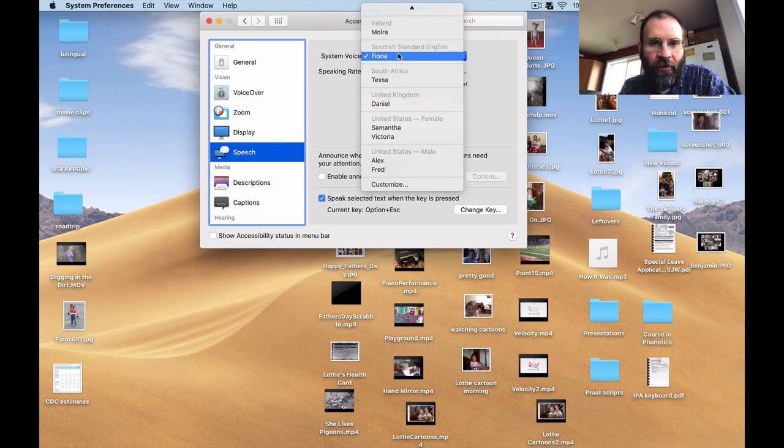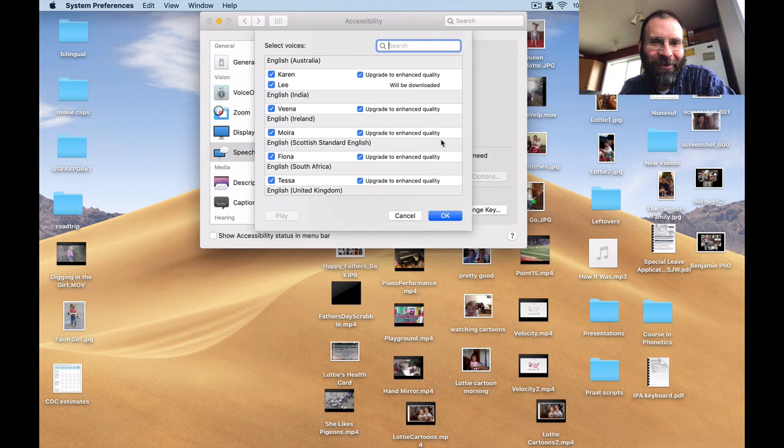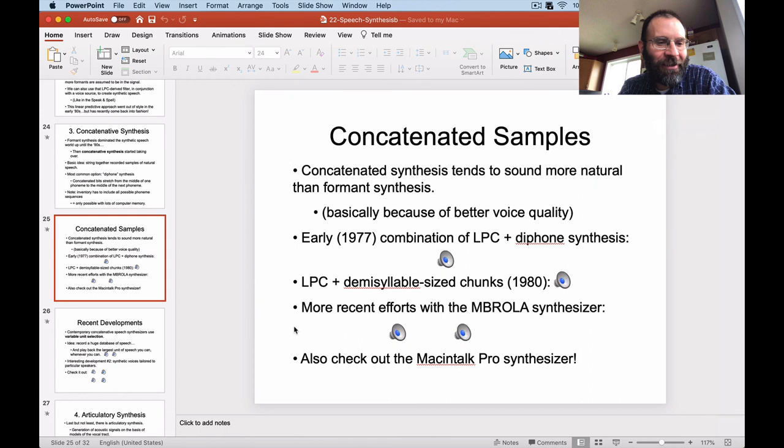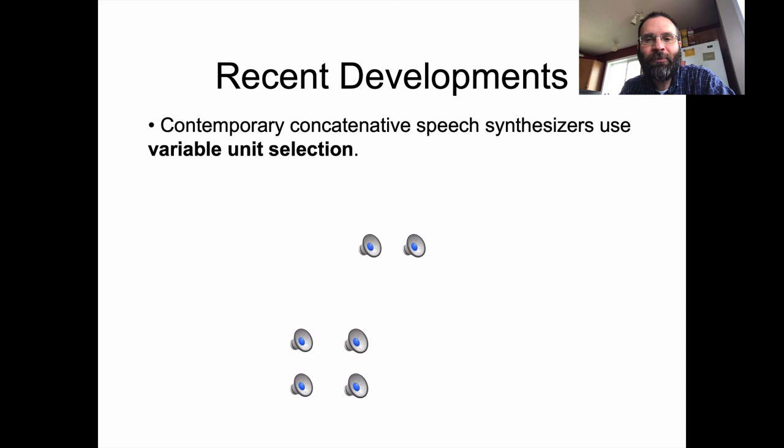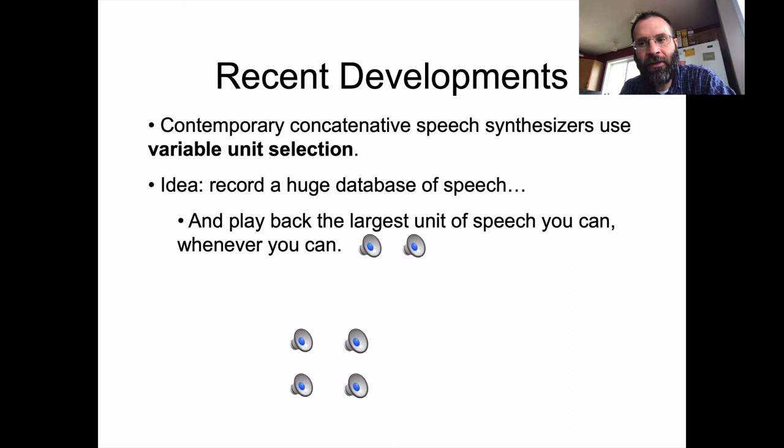The Mac synthesizer has different accents too — here's Fiona, the Scottish speaker: 'Hello, my name is Fiona. I am a Scottish English voice.' It also has an option for speaking selected text when you press a specific key combination. Concatenative synthesis tends to sound more natural than formant synthesis. In theory, you could create your own voice for this — just record yourself and plop your own recordings into the system. Contemporary concatenative speech synthesizers use what's called variable unit selection: record a huge database of speech and play back the largest unit you can whenever possible.